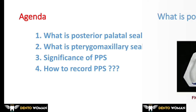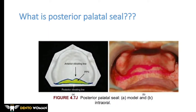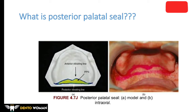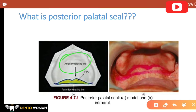What is posterior palatal seal? In simple terms, the soft tissue along the junction of the hard and soft palate creates an area known as the posterior palatal seal. We can apply pressure on it, but within physiologic limits. We need to record it to get better retention. In other words, posterior palatal seal is the area between the two vibrating lines — the anterior vibrating line and the posterior vibrating line.